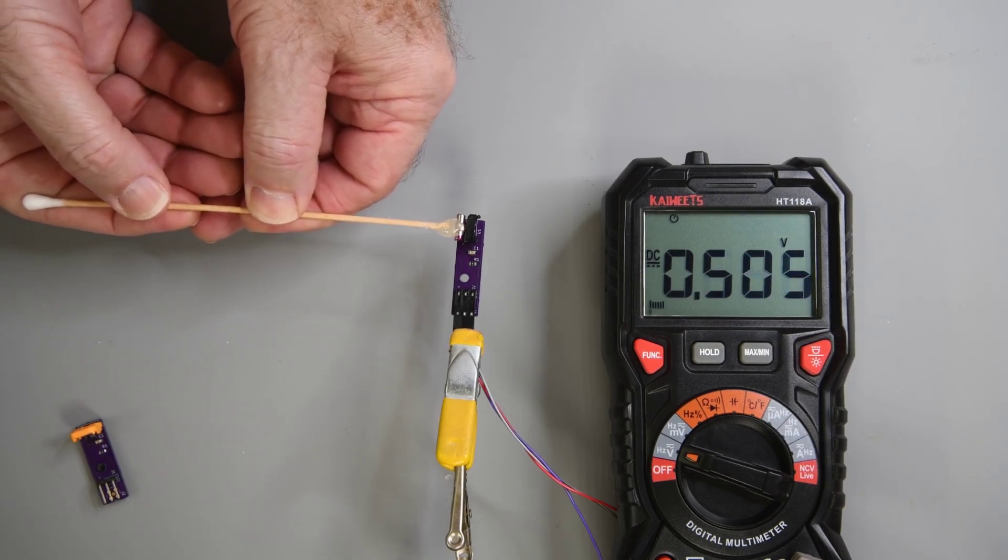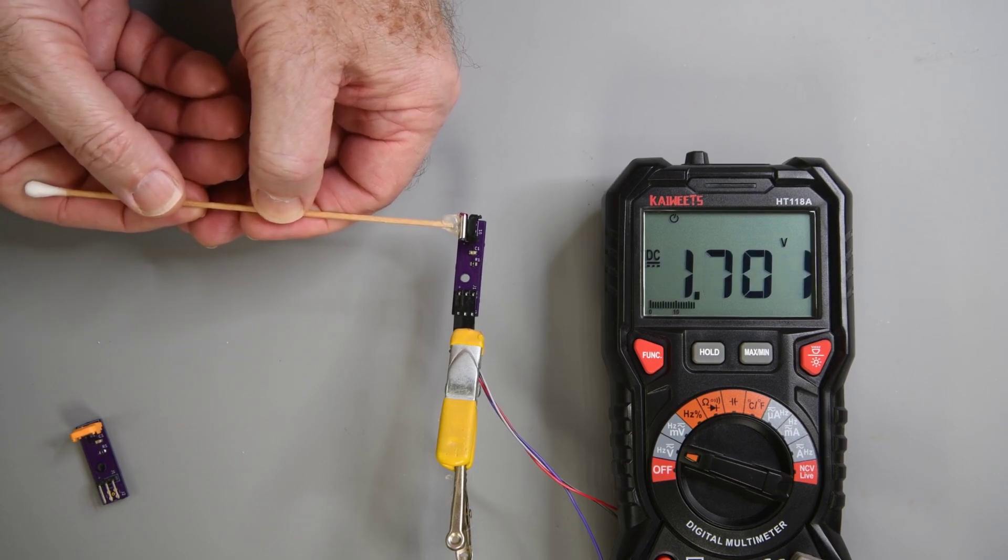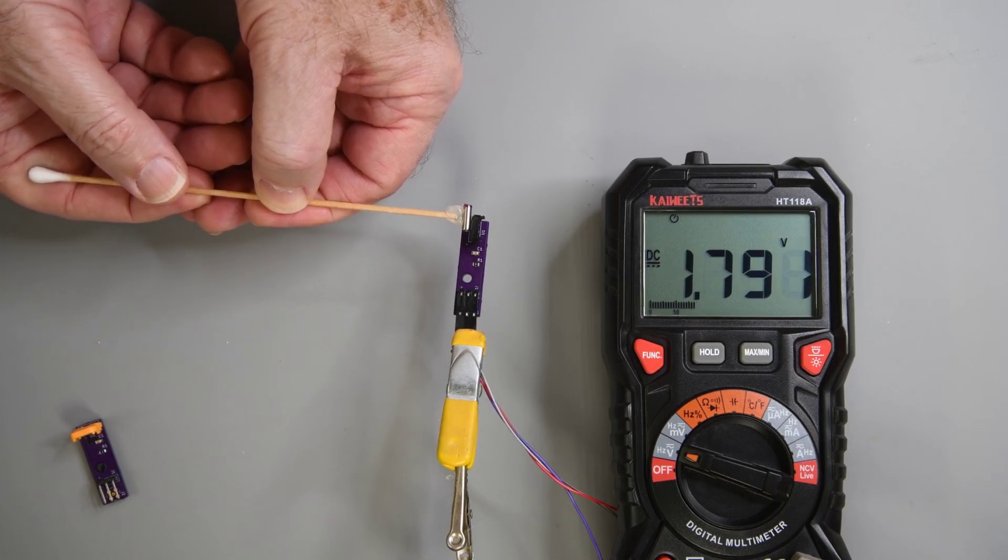The direction of the poles makes a huge difference for this sensor. If I rotate the magnet 180 degrees the output goes to near 1.8 volts. And only drops when I get close to either pole.